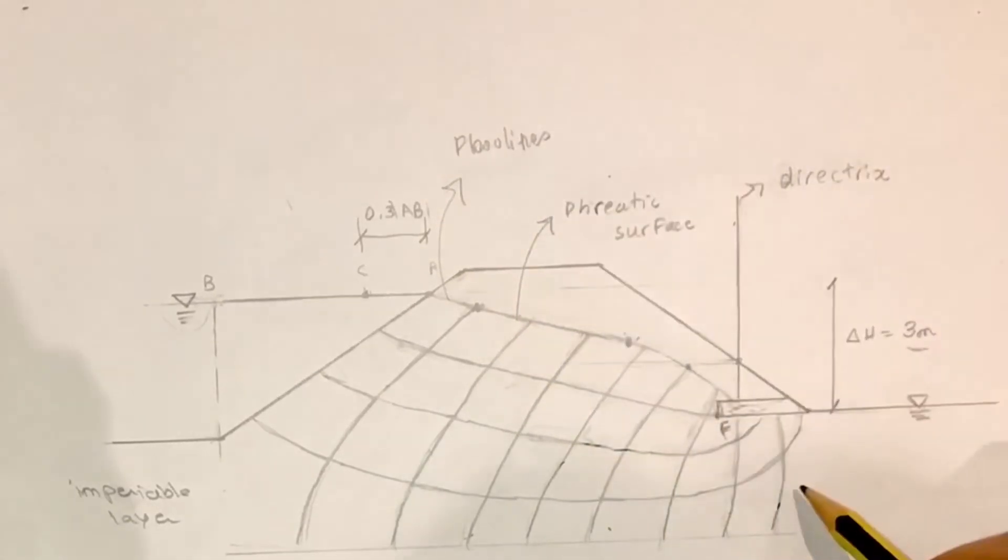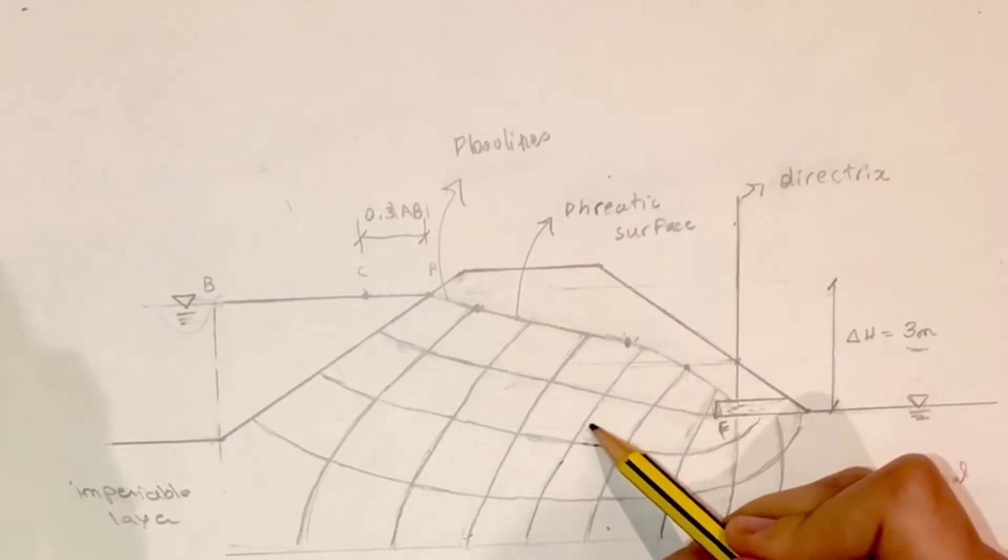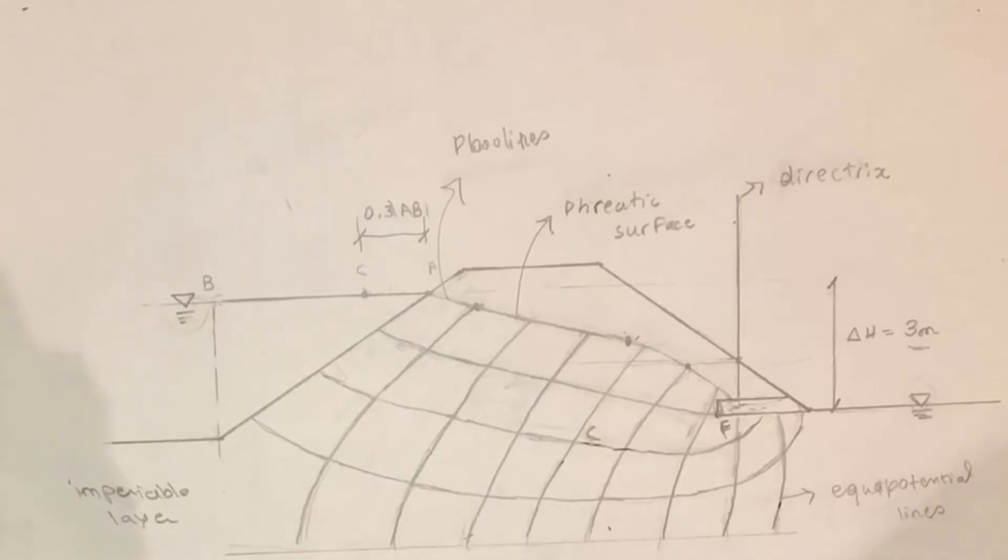The flow lines track the path that a water molecule will travel. This is why flow lines can't intersect as water molecules can't be at two spots at a time.